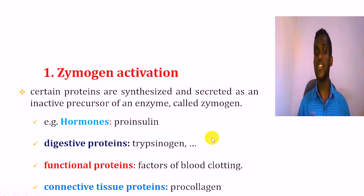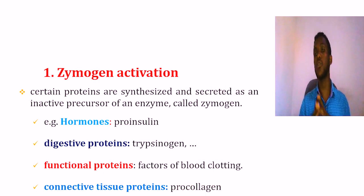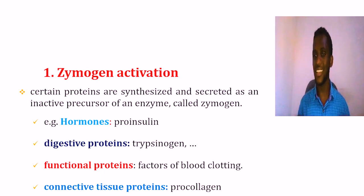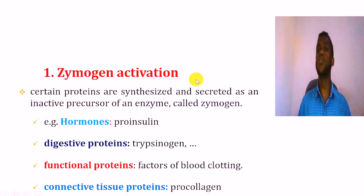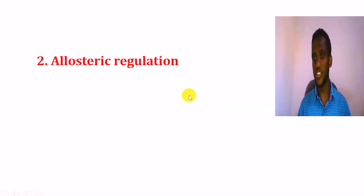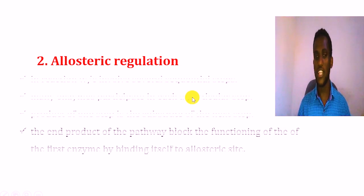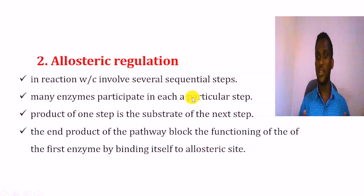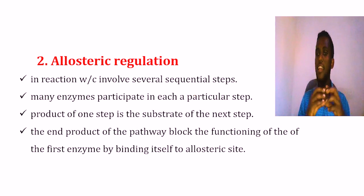So, if you have an inactive precursor, the precursor enzyme activates the enzyme. If you have strict regulation — for example, an enzyme like insulin — it will regulate the enzyme activity.